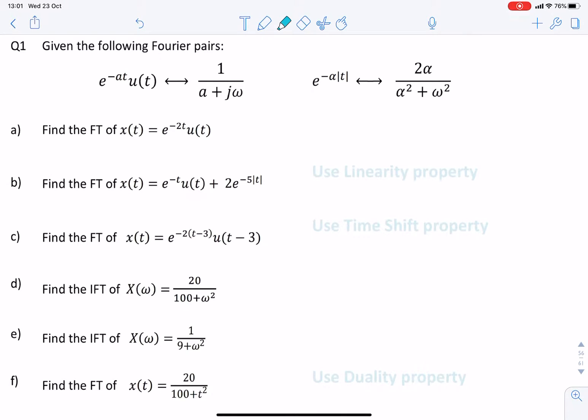So the first question asks us to find the Fourier transform of e to the minus 2t, and that looks exactly the same as that, but we'd have a equals 2, so the answer for the first one would be simply 1 over 2 plus j omega.